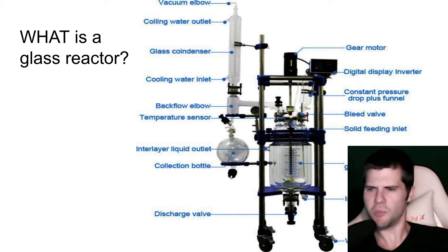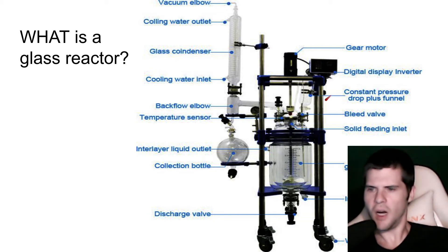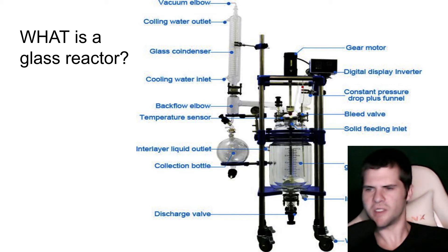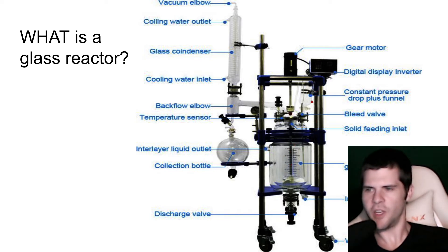Here you have the feeding inlet, which is where we will be able to transfer material into the actual glass reactor for the reaction to take place. Right here, this little guy is a bleed valve, and this bleed valve is actually only for bleeding oxygen into the reaction depending on what reaction you're doing. It can also be used as an auxiliary port. Here you have a constant pressure drop plus funnel, so if you wanted to use a graduated cylinder to measure how much of each specific material you're allowing to feed in, you can use that for that.